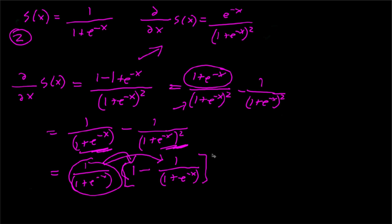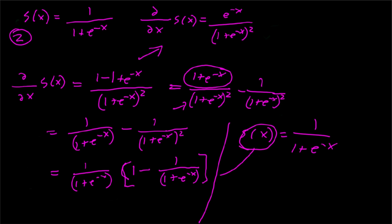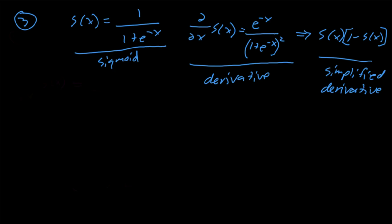This expression looks messy, but the sigmoidal function s(x) is defined as 1 over 1 plus e to the negative x. So we substitute s(x) in place of that term. The final result is that the derivative of the sigmoidal function with respect to x equals s(x) times (1 minus s(x)). Now for the third part: why do we use s(x) times (1 minus s(x)) instead of the original derivative form?